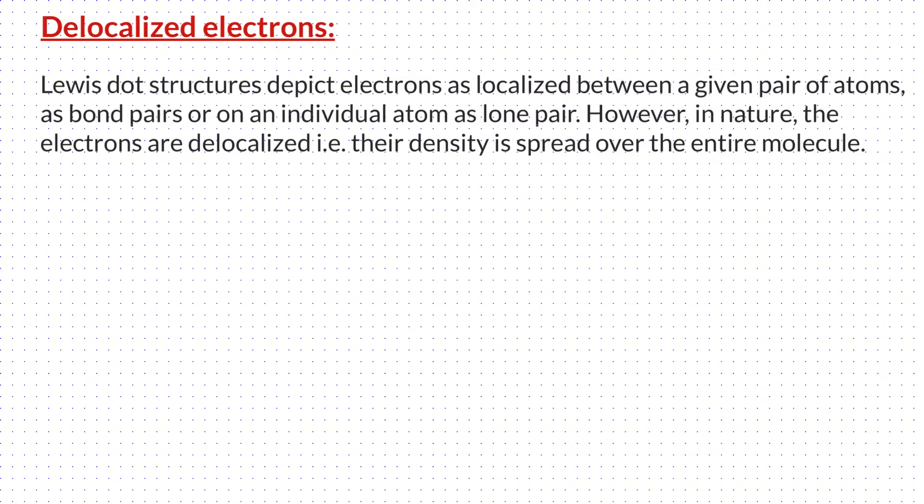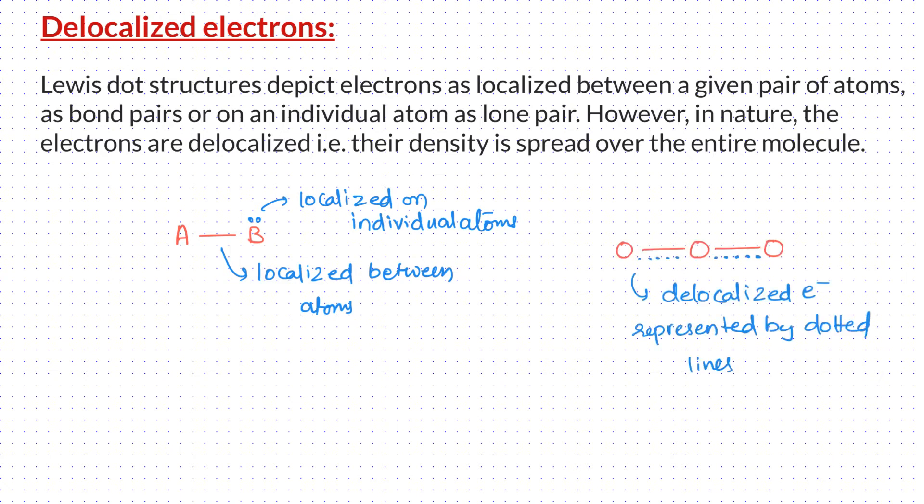Lewis dot structures depict electrons as localized between a given pair of atoms as bond pairs or on an individual atom as a lone pair. However, in nature, the electrons are delocalized, i.e., their density is spread over the entire molecule. The delocalized electrons are represented by dotted lines.